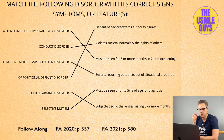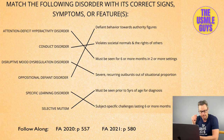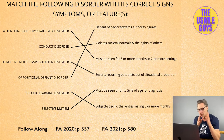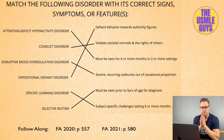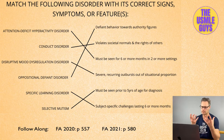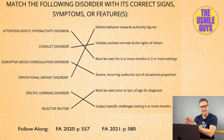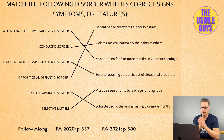Then we have autism spectrum disorder. This is seen in early childhood and is characterized by deficits in social settings as well as with communication. Patients have restricted interests and typically demonstrate repetitive and ritualistic behaviors. Intellectual disability is commonly seen in autism spectrum disorder, but they also have a unique feature: they tend to have above-average ability with specific skills — oftentimes they're musical geniuses.